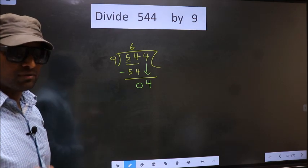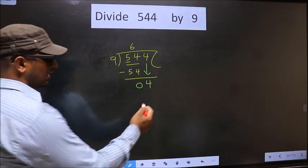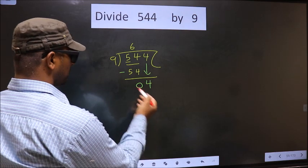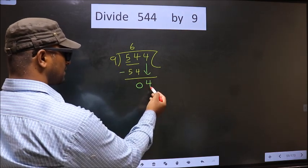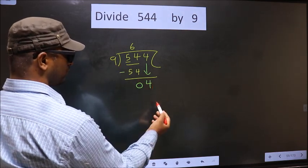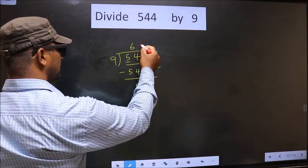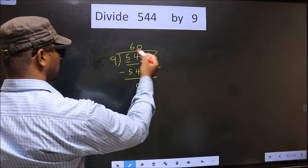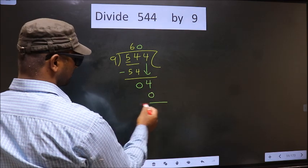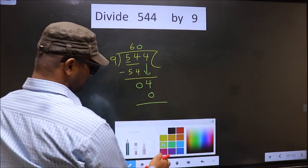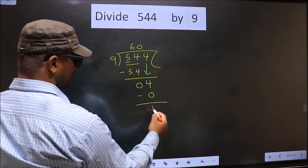Instead, what you should think of is: what number should we write here? If we write 9 here, that is larger than 4. So what we do is we take 0 here. So 9 into 0 is 0. Now you subtract: 4 minus 0 is 4.